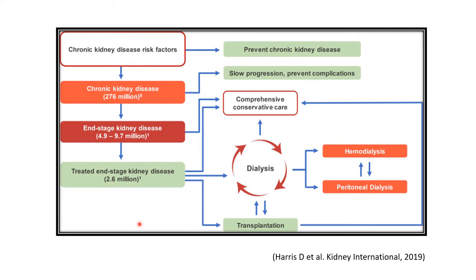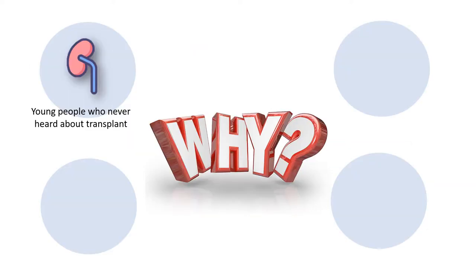This is an overall diagram of how transition from CKD to end-stage kidney disease works. You have a few options: dialysis — either hemodialysis or peritoneal dialysis — transplantation, and comprehensive conservative care. It seems pretty straightforward, and it seems like anybody can give these options to the patient. But my question is: if we are doing so well with all the management and transition from CKD to end-stage, how come there are many young people who have never heard about transplant?